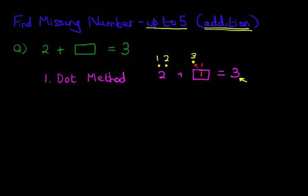We had 2 to begin with, and we counted forwards, and we had to add one more dot. That's very simple. That is the dot method.